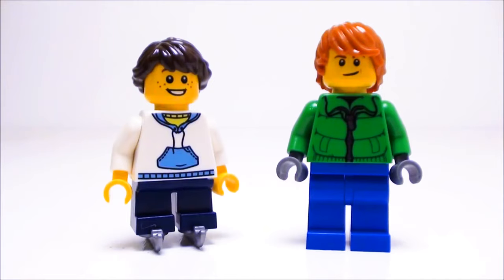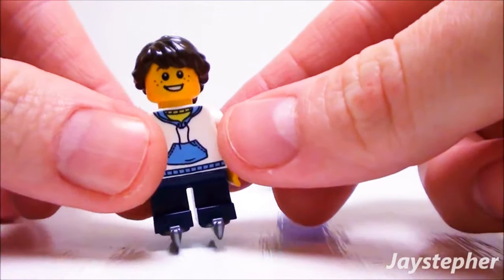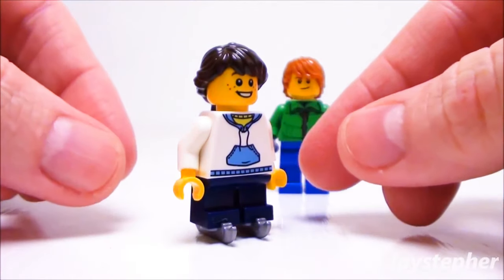First, let's take a look at the two minifigures. We have a young lady and a young gentleman. Let's take a look at the young lady. She's on a set of ice skates. The skates are very stable.